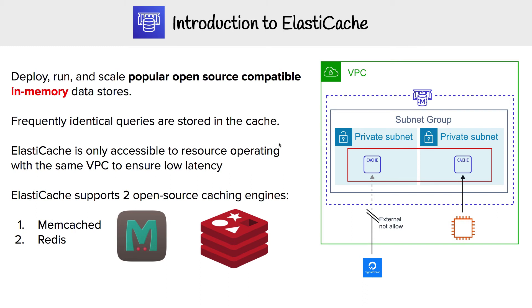One caveat I found when using this in production is that ElastiCache is only accessible to resources operating in the same VPC. Here I have an EC2 instance — as long as it's in the same VPC, it can connect to ElastiCache. If you're trying to connect something outside of AWS, such as DigitalOcean, that is not possible. And if it's outside of this VPC, you're not going to be able to make that connection, though through peering or some other efforts you could do that.